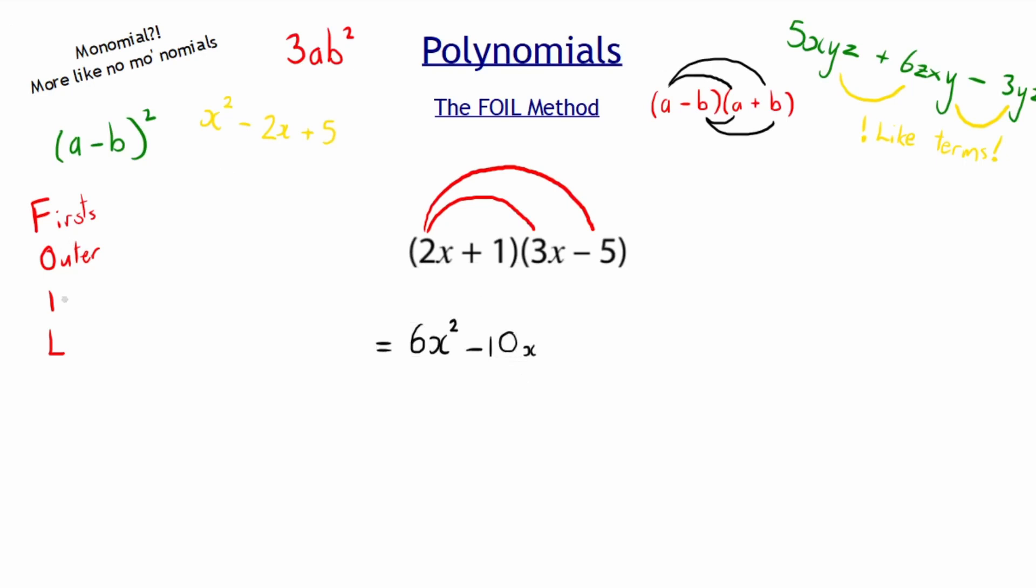Let's continue on to the next letter, I, and I means inner or inside. So which are the inside terms? The inner terms are the plus 1 and the 3x, and those must multiply. So 1 multiplied by 3x is positive 3x.